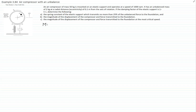We have the mass of the compressor equals 50 kilograms, the mass of the unbalance 2 kilograms, the eccentricity 0.1 meters, and zeta, which is the damping ratio, equals 0.1. The speed of rotation is 1000 RPM, which expressed in radians per second we multiply by 2π divided by 60, giving us 104.72 radians per second.